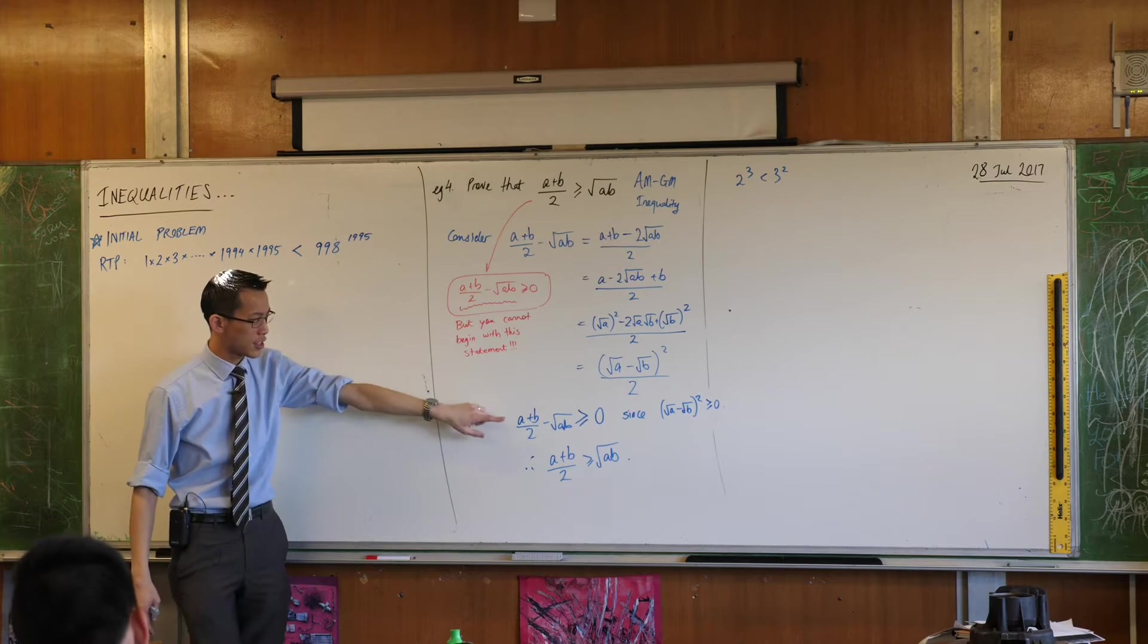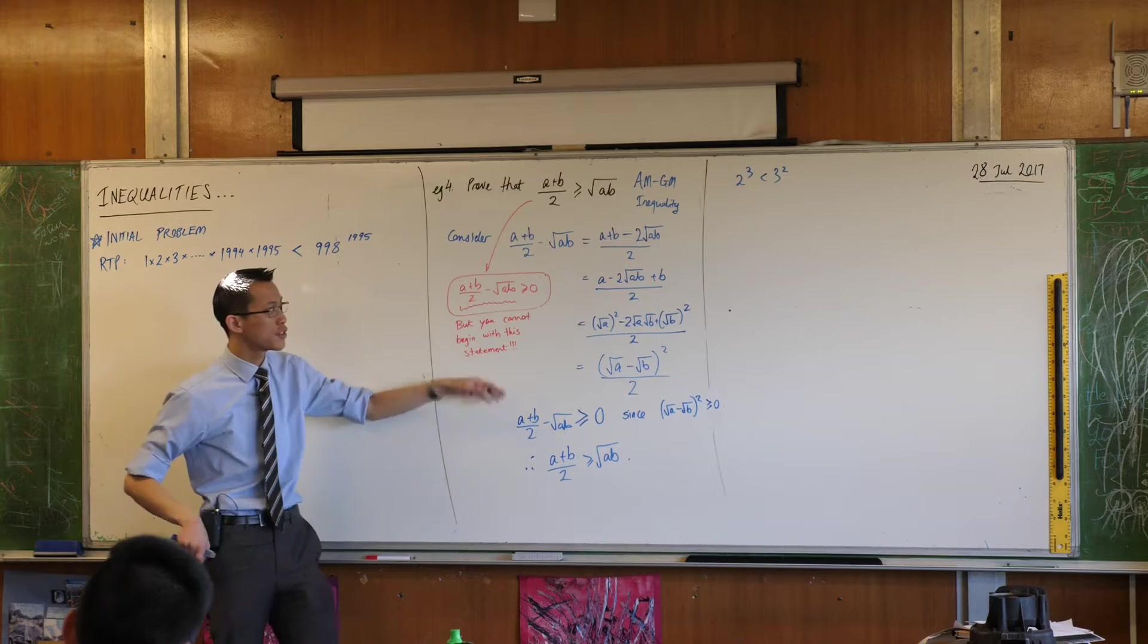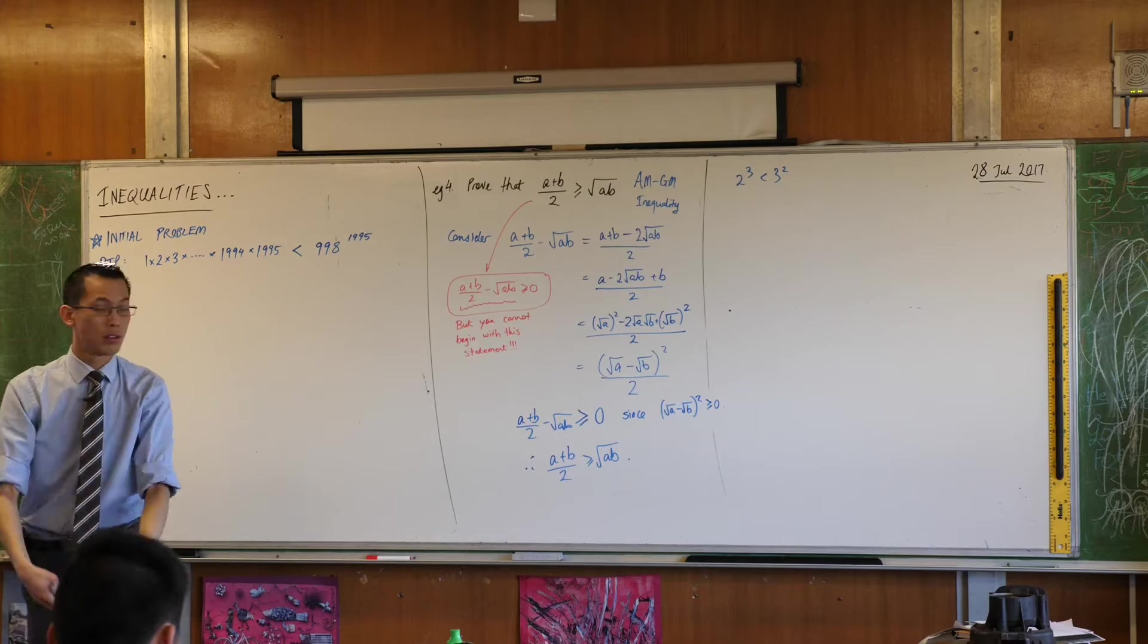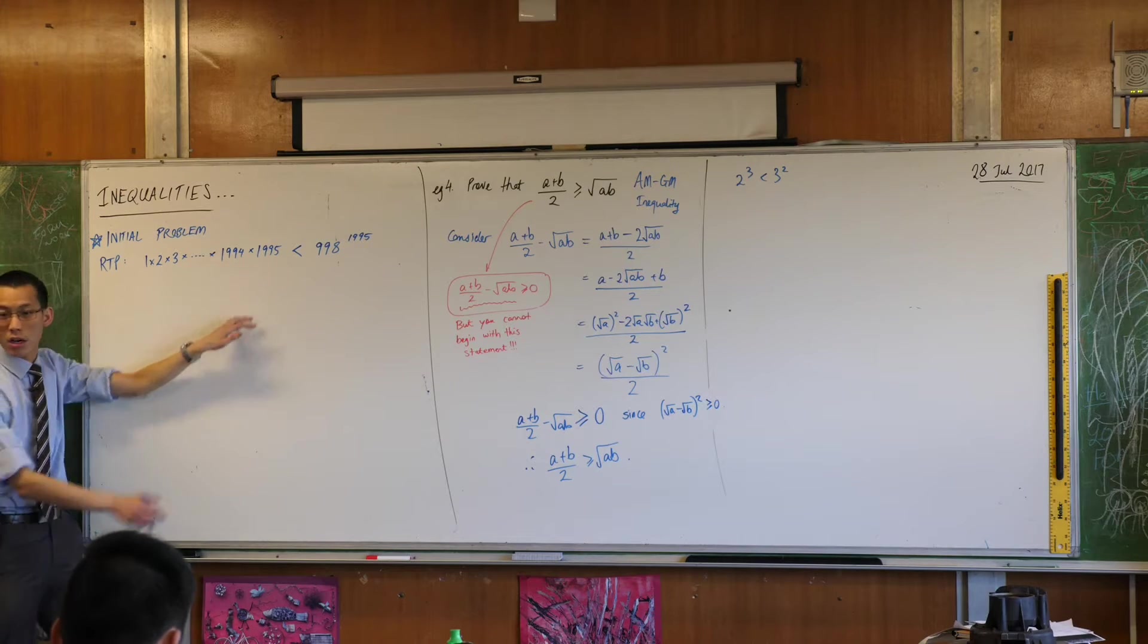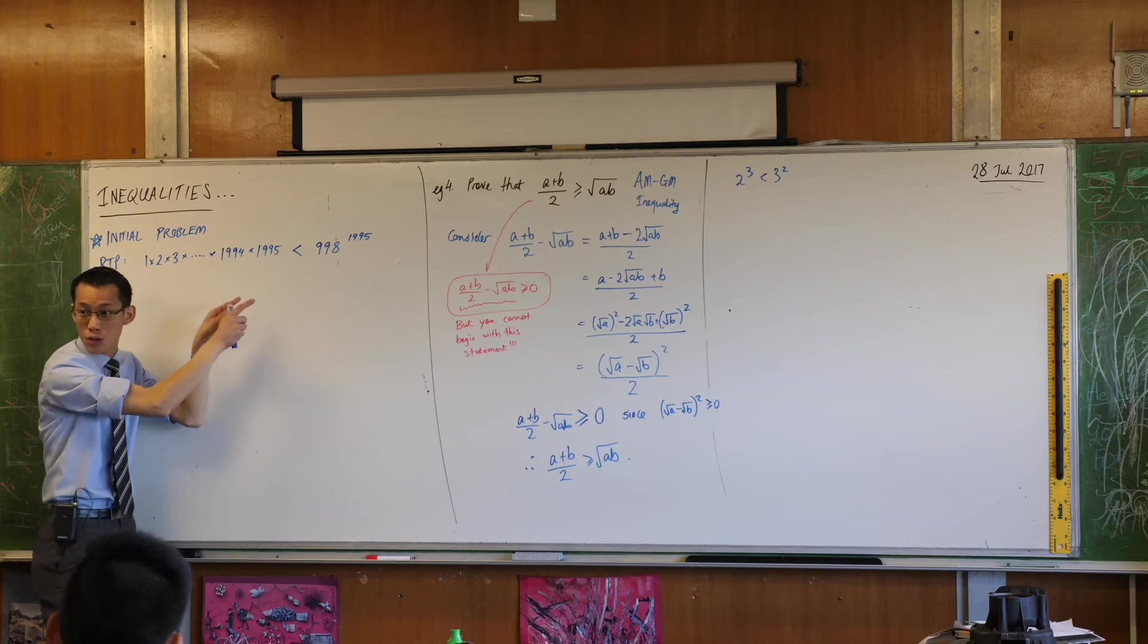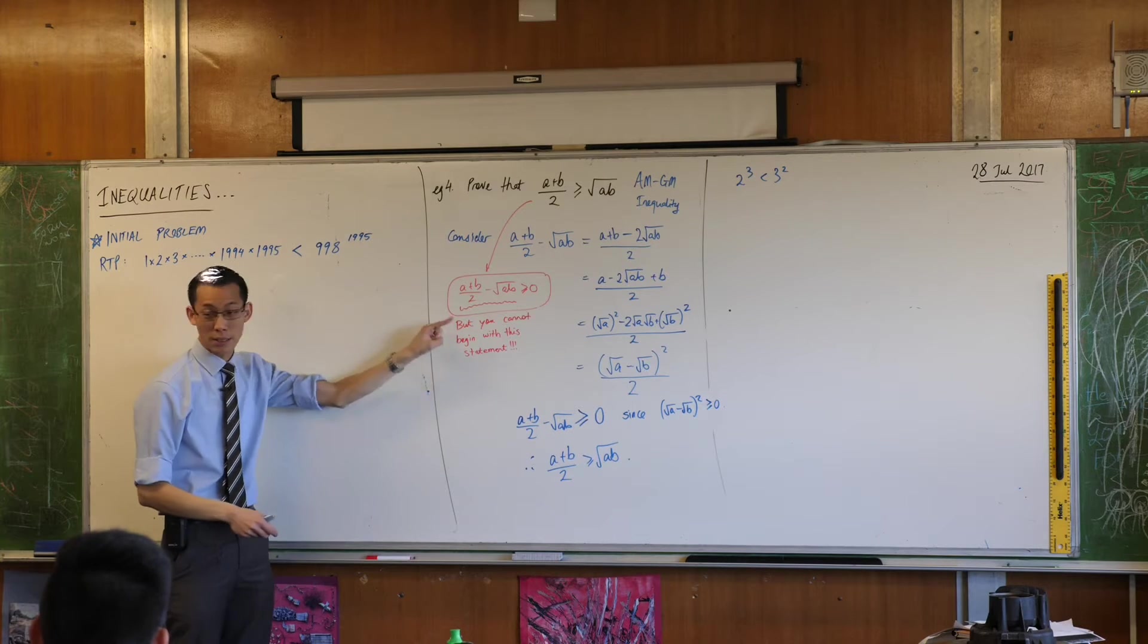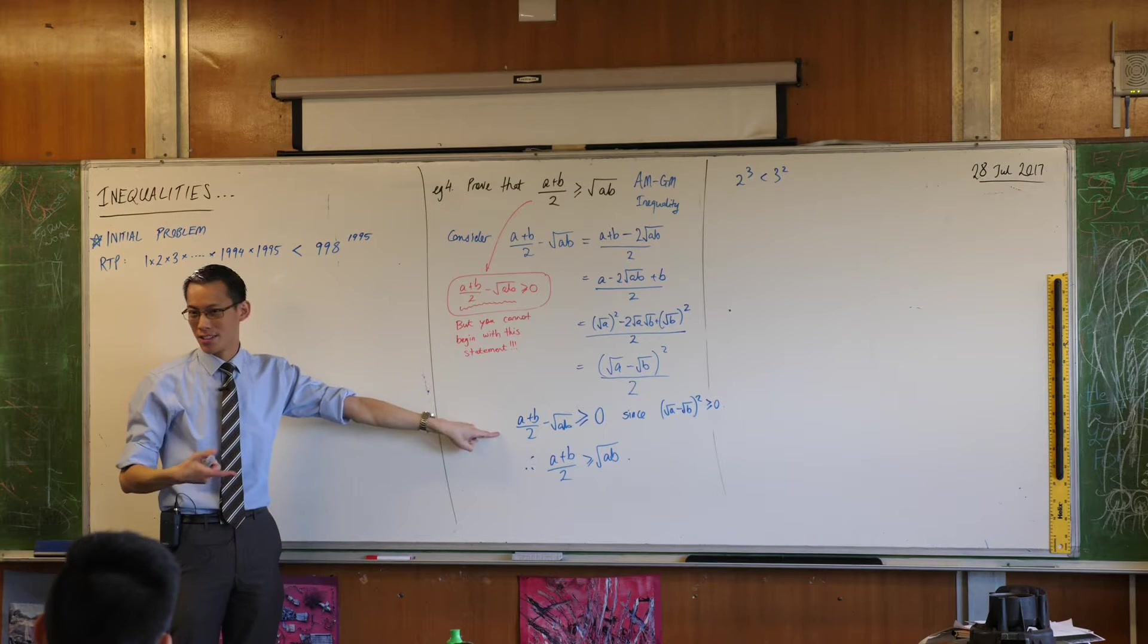So you can't begin with this statement. In fact, the first time that I actually write something like this is right at the very end, after doing all of this algebraic legwork. So when you see a question gives you a result, you can't say, oh look, here's a result. I'm now going to start doing some stuff on the left and right hand side of this as if this were true, because you do not know that it's true yet. So that's why I put this in big red letters. You can't begin with this. You can think it, but you can't get to it till the end.